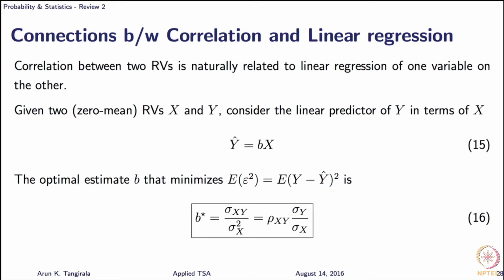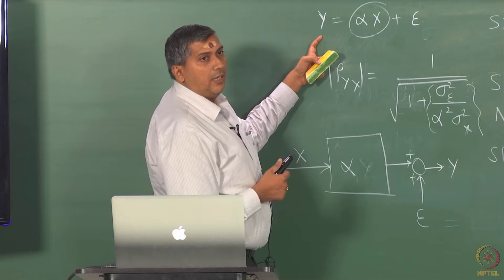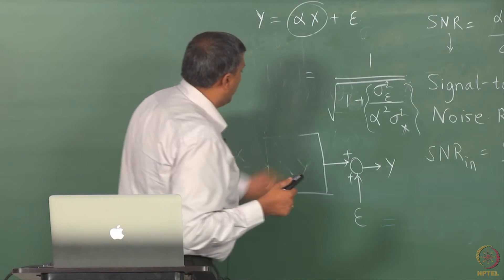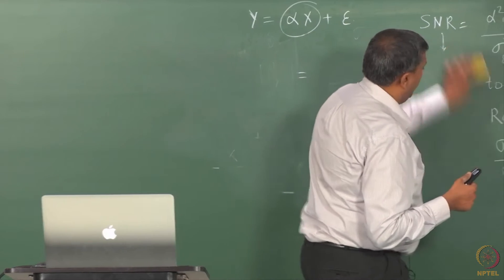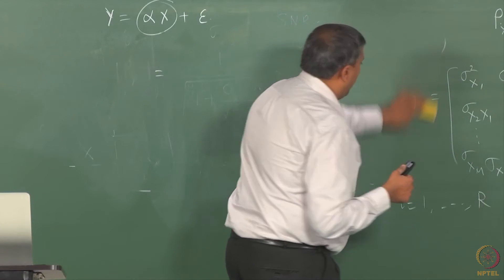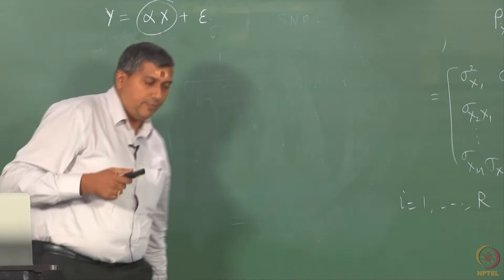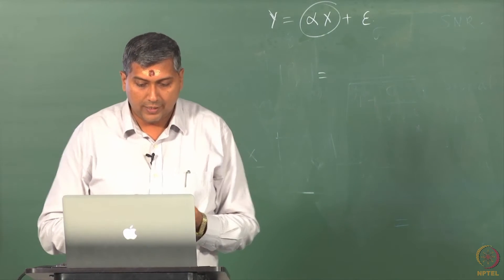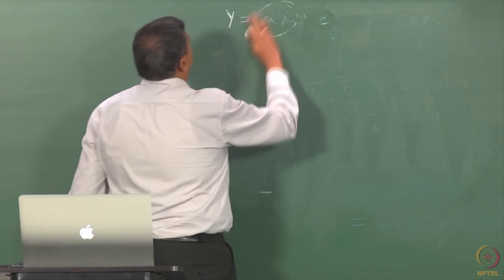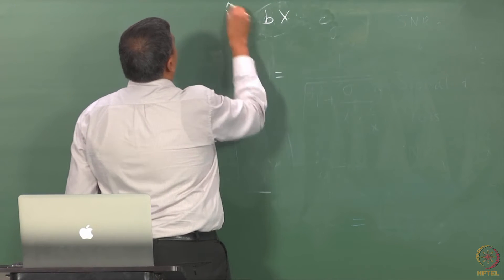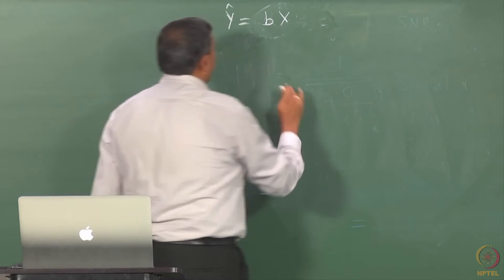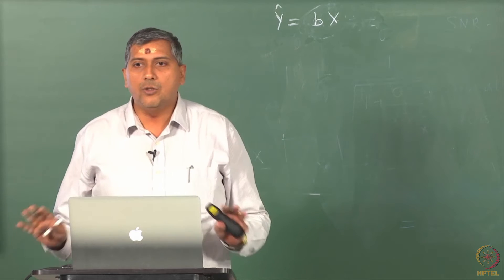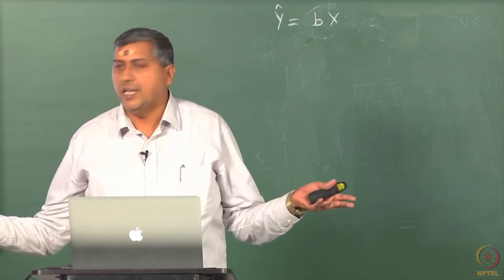Just now we talked about it - I said if you are given data of y and x, how do you estimate alpha? That establishes the connection between correlation and linear regression. So it turns out that when I want to fit a linear model, let's say I assume perfect linear relationship y hat equals bx. Remember, I have not written y equals bx - I am saying that I am going to predict y using a linear function of x. This is the linear regression problem.